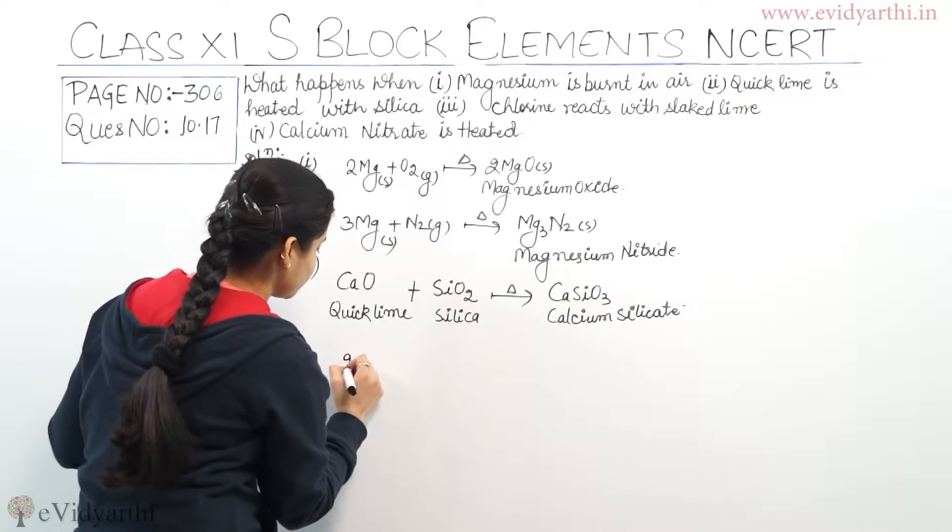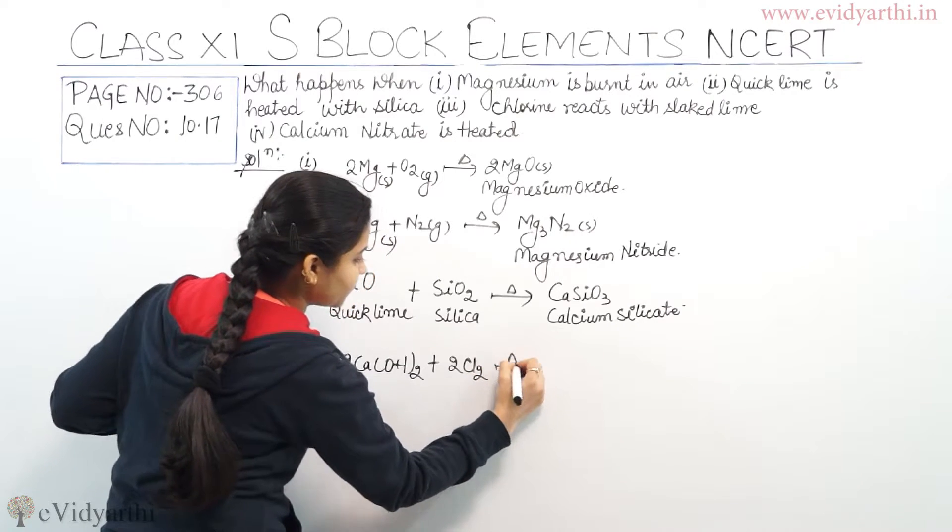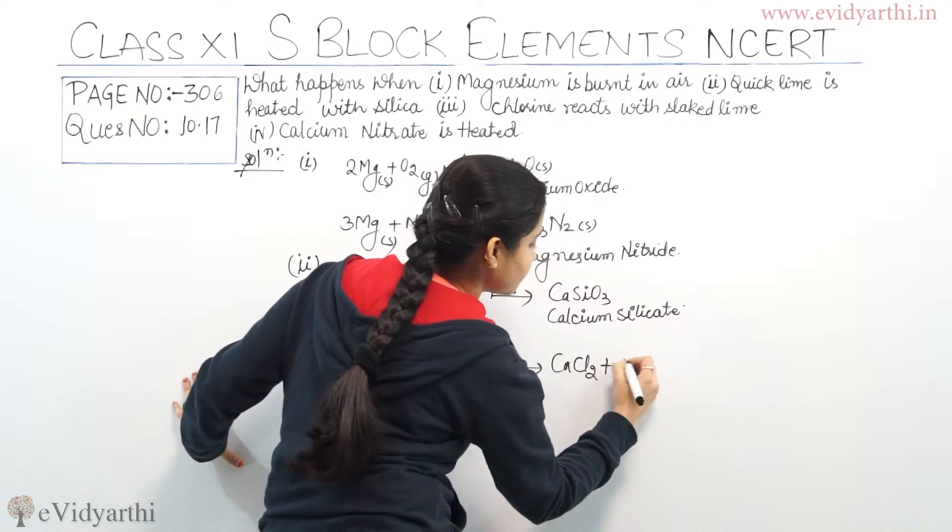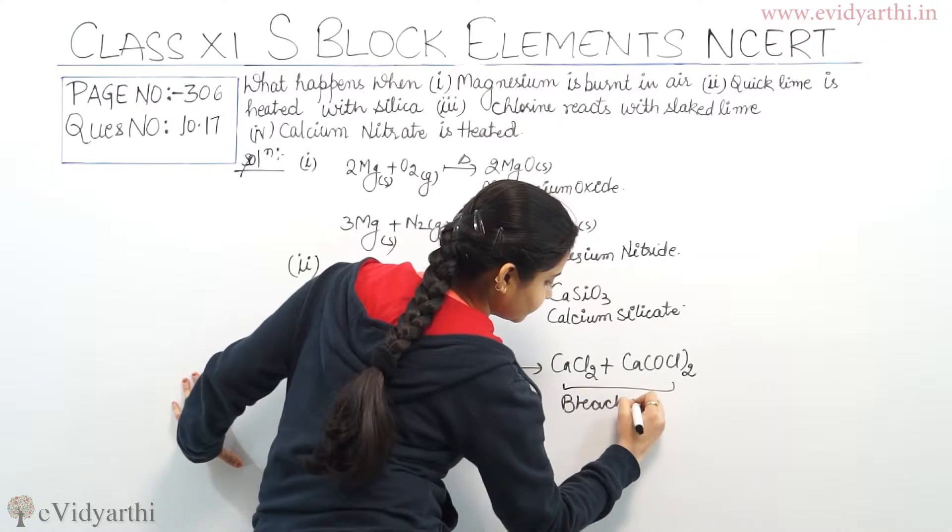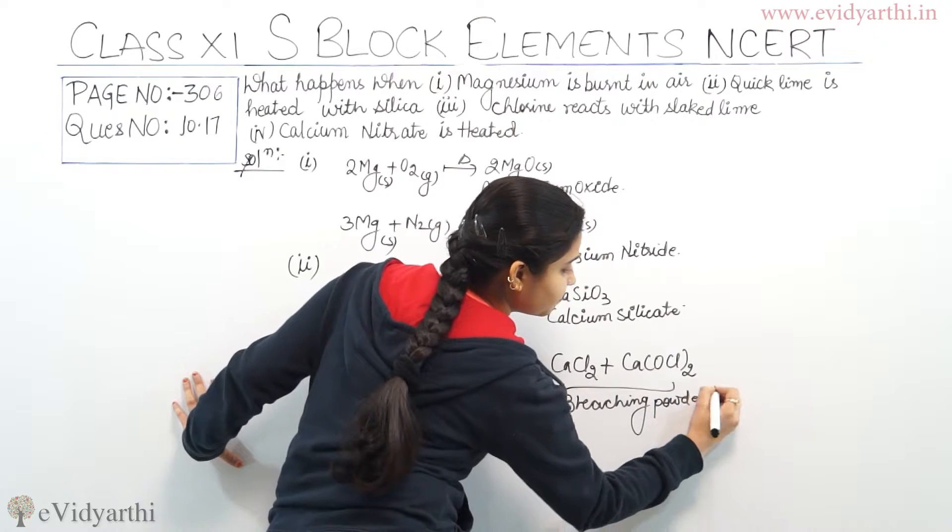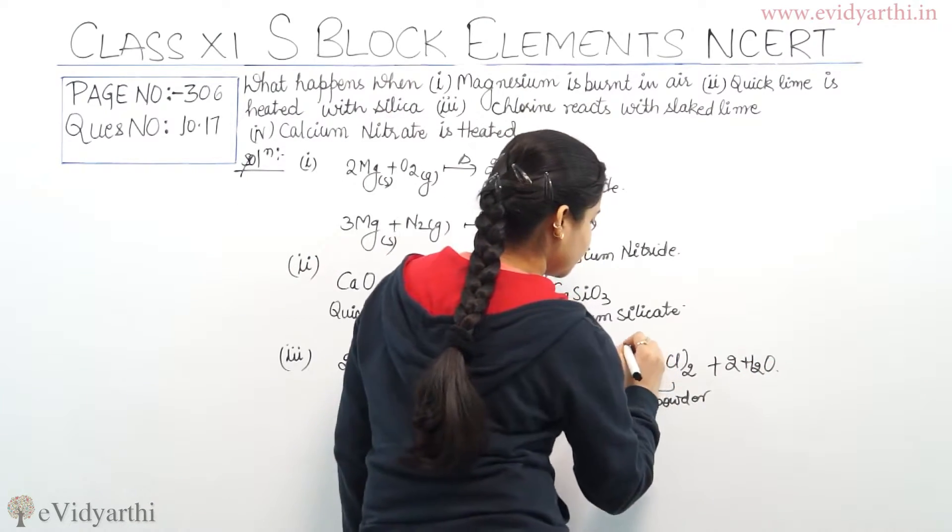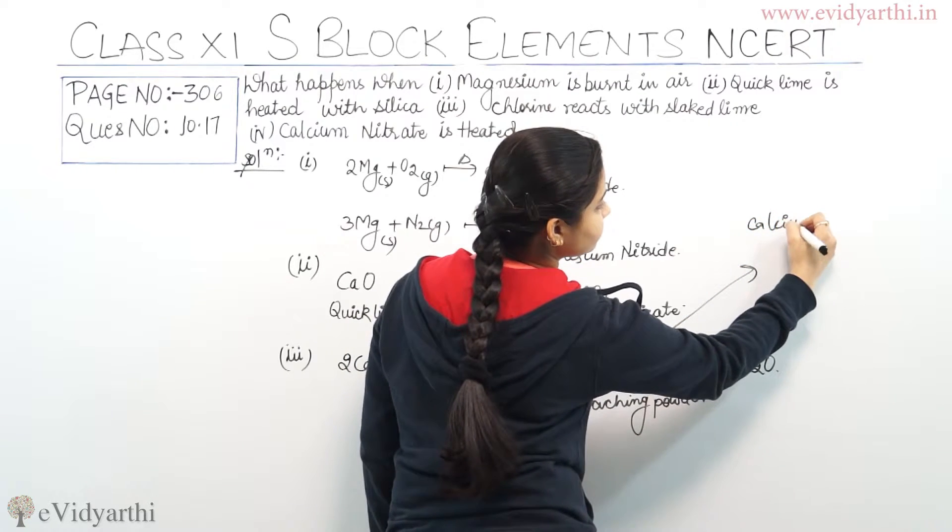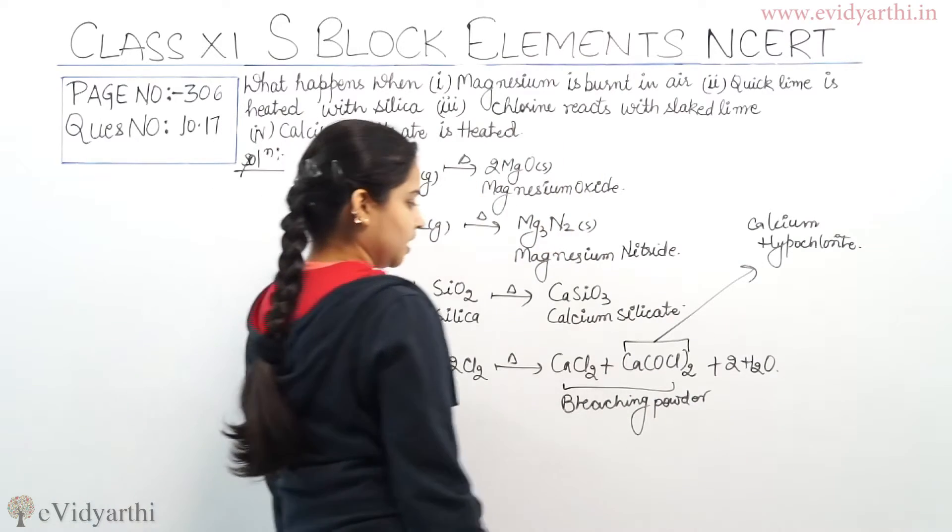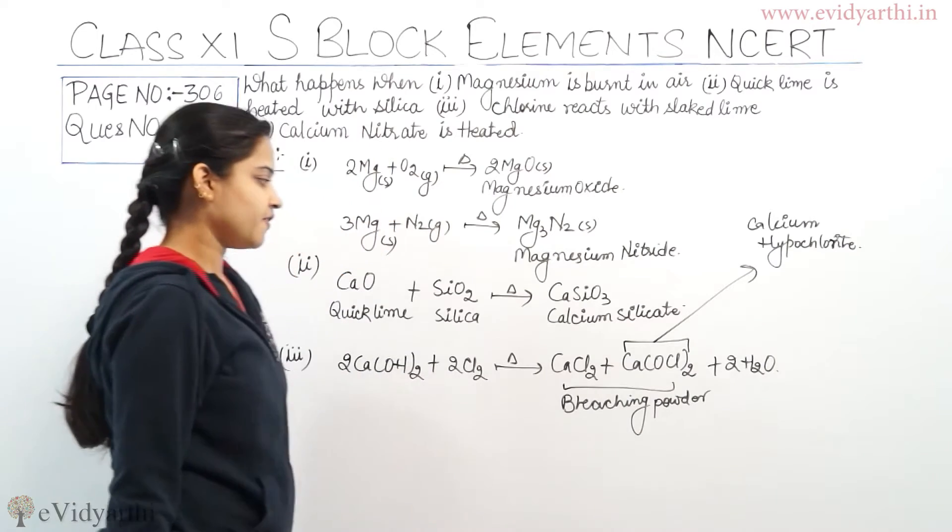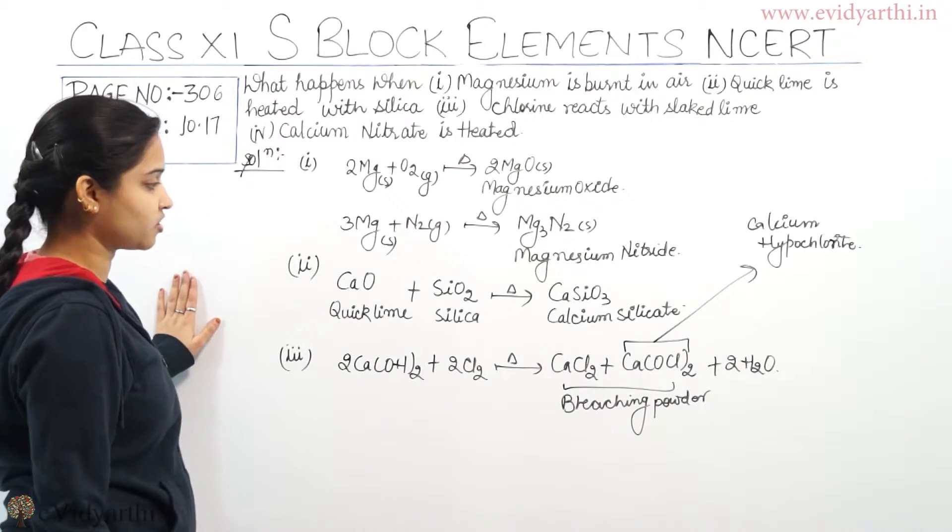Now I am writing the reaction. Slaked lime is calcium hydroxide, so 2Ca(OH)2 plus chlorine Cl2, when heated, what we will be getting? We will be getting CaCl2 plus Ca(OCl)2, this is the bleaching powder, plus 2H2O. This is calcium hypochlorite, the constituent of bleaching powder.